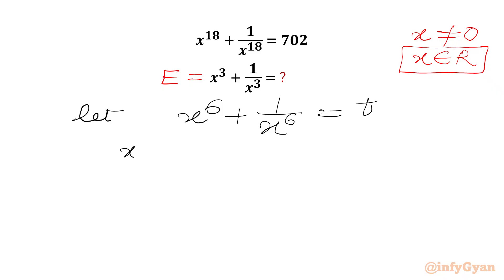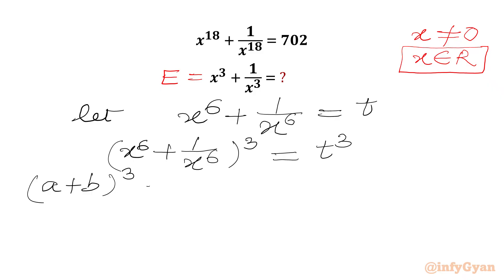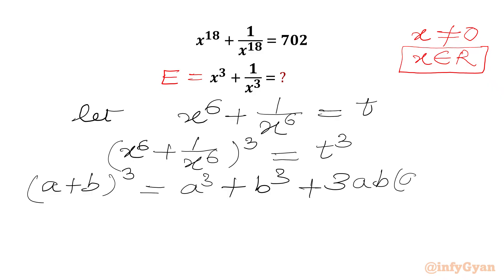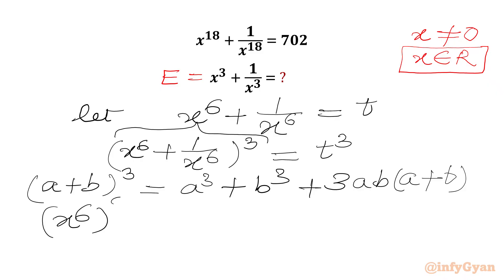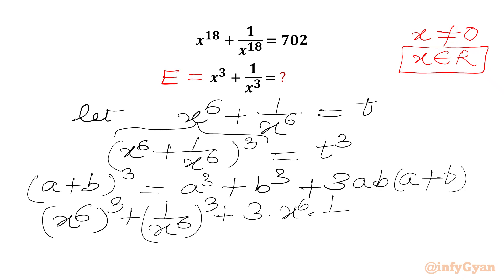Now we will consider cubing both sides, so x power 6 plus 1 over x power 6, whole cube, equals t cube. We are going to use the (a + b) whole cube formula, which equals a cube plus b cube plus 3 times a times b times (a + b). Here a is x power 6 and b is 1 over x power 6. Applying this to our LHS, we get x power 6 whole cube plus 1 over x power 6 whole cube plus 3 times x power 6 times 1 over x power 6 times (x power 6 plus 1 over x power 6), and RHS is t cube.